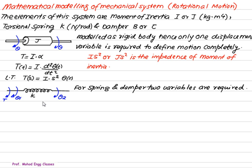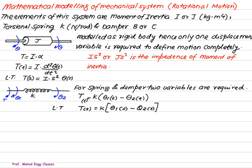Since spring and damper are both flexible, we require a minimum of two variables: theta one and theta two. Torque is applied on the theta one side, so theta one is greater than theta two. This concept is the same as in translational motion. Torque is proportional to K times (theta one minus theta two). Taking the Laplace transform gives T(s) = K · [θ₁(s) − θ₂(s)], where K is the impedance of the spring.